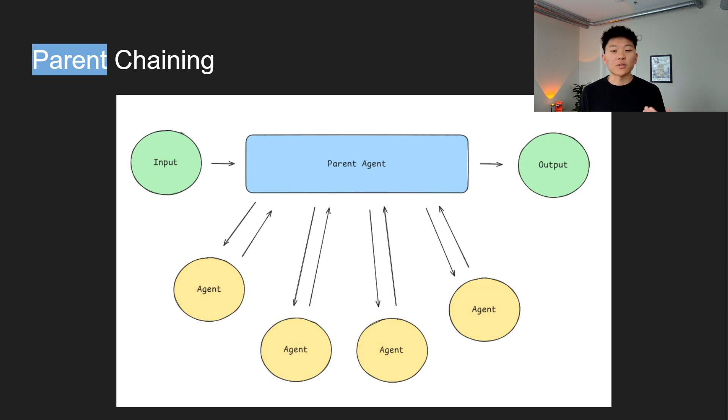The parent collects their outputs and then integrates them into one cohesive result, which is the output. This system is going to be a lot more flexible and resilient compared to sequential chaining because if one child fails, the parent can reroute the task to another agent or have the child try again and handle the error more gracefully. However, it does require more planning and a little bit more complexity in terms of the architecture.